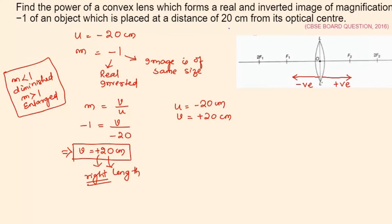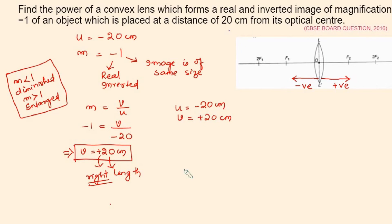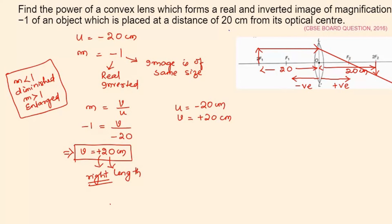If we recall the ray diagrams, when the object is situated at 2f the image is also formed at 2f but on the other side of the convex lens. So the object is situated at point 2f₁ and the image is formed at the corresponding 2f point on the other side. Let's draw the ray diagram: one ray goes parallel to the principal axis and after refraction passes through f₂; another passes through the optical center undeviated. So here is our image — same size but real and inverted.